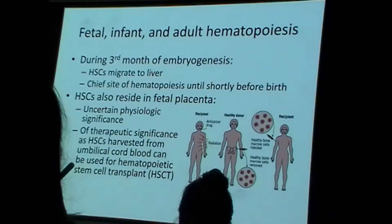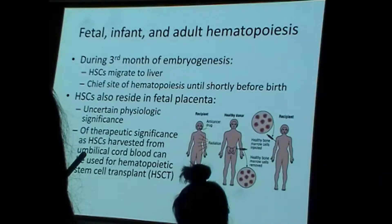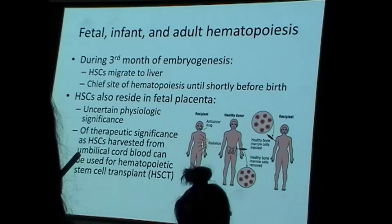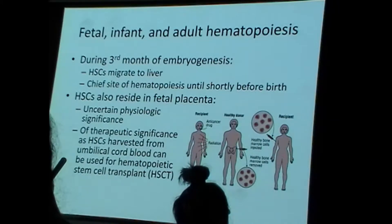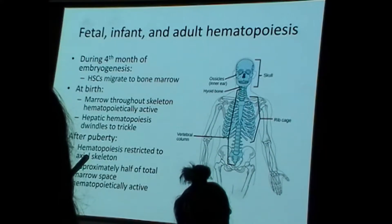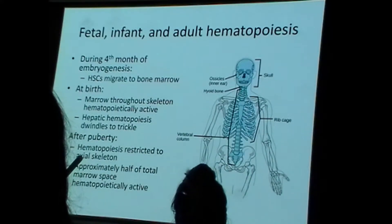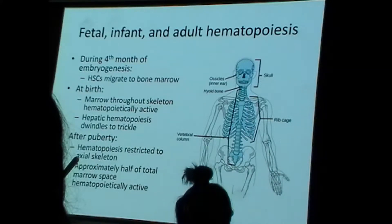What do we call it when the liver is abnormally large? Hepatomegaly. The liver, just like the spleen, is able to awaken these dormant abilities from early on to produce blood cells. Hematopoietic stem cells also reside in the fetal placenta. We don't actually know why in terms of functional contribution, but this is particularly useful for harvesting hematopoietic stem cells for therapeutic purposes.